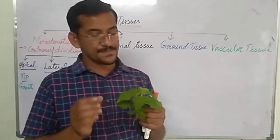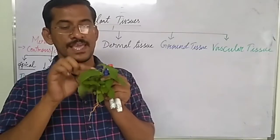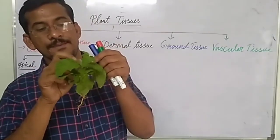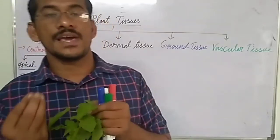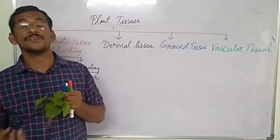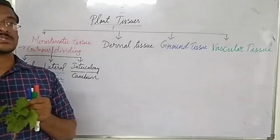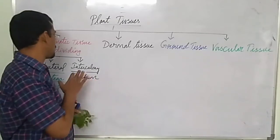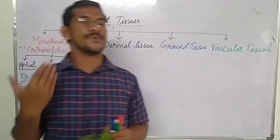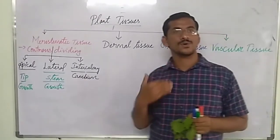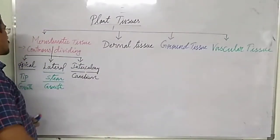The third type is intercalary meristematic tissue, also called cambium. It is present between the leaf base and the stem — where a bud, flower, or leaf arises. These tissues are present in intercalary places and they help in branching, aiding the growth of new branches.